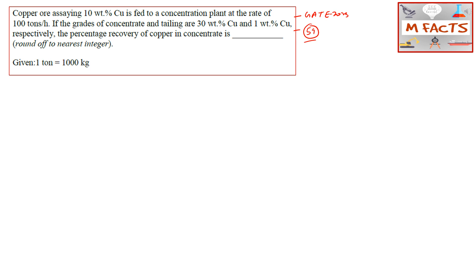In GATE metallurgical engineering, questions from this part appear every year and may be worth one or two marks, so it is very important. The question states: copper ore has 10 weight percent copper and is fed to a concentration plant at 100 tons per hour. The grades of concentrate and tailings are 30 weight percent and 1 weight percent copper respectively. Find the percentage recovery of copper in the concentrate.